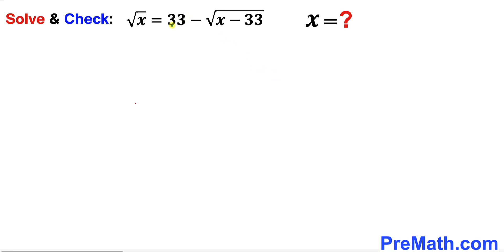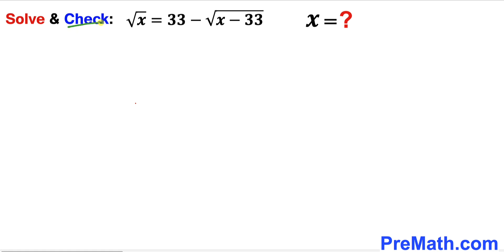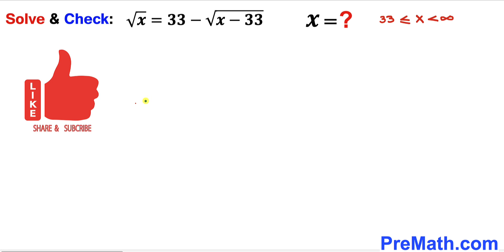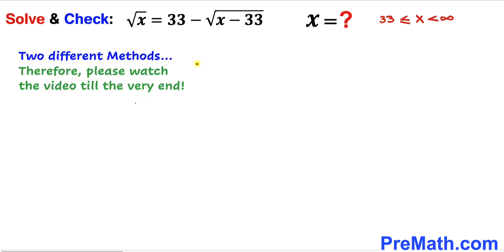Welcome to pre-math. In this video we are going to solve the radical equation: square root of x equals 33 minus the square root of x minus 33. We are going to solve for x values, check our answers for any extraneous solutions, and note that our domain is x greater than or equal to 33. I will share two different approaches, so please watch the video till the very end.